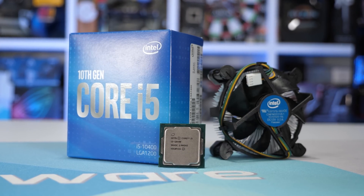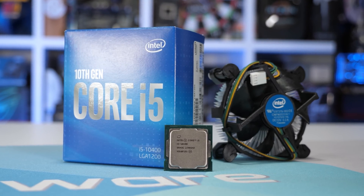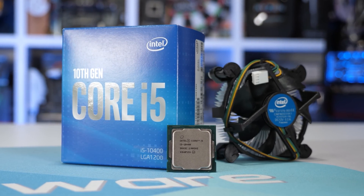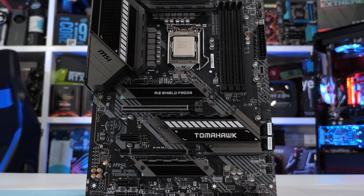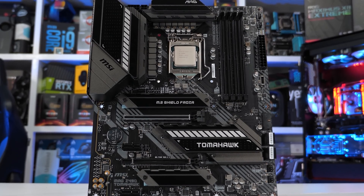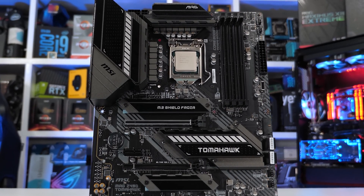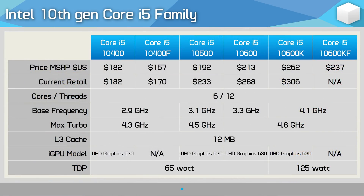The 10th gen Core i5 series consists of the 10400, 10400F, 10500, 10600, 10600K, and the 10600KF. All models feature six cores with 12 threads and a 12MB L3 cache. The non-K models are rated with a 65W TDP, while the unlocked K-SKUs pack a 125W TDP. The F-SKUs drop the integrated UHD Graphics 630 engine, which typically makes them a little bit cheaper.